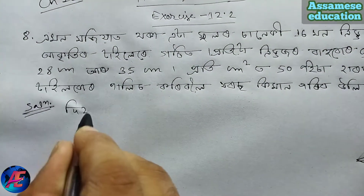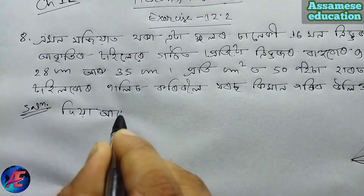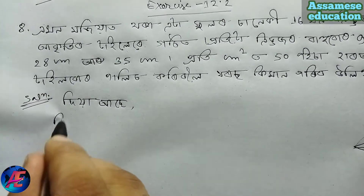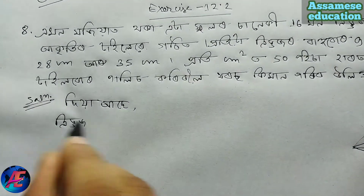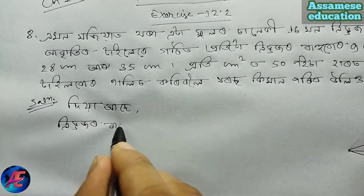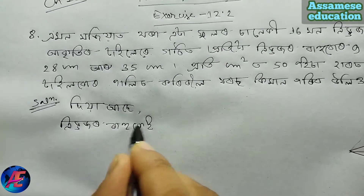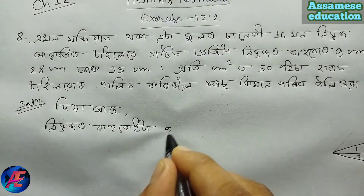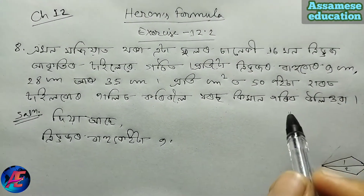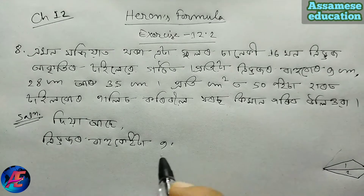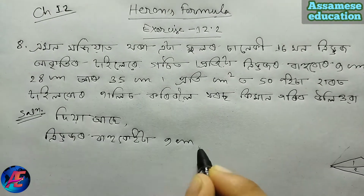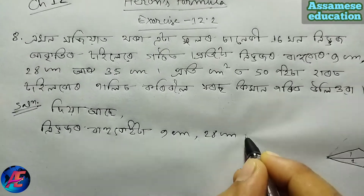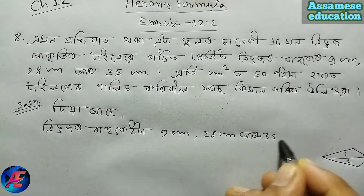So, there is a given triangle. The sides are 28 cm, 9 cm and 35 cm.